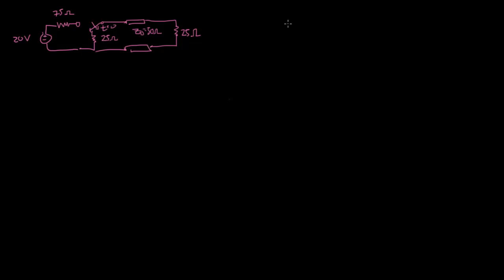Everything was initially charged in its steady state all the way up until t equals zero, and then we flip the switch down to that resistor. We want to find the bounce diagram for t going from zero all the way to 4τ.